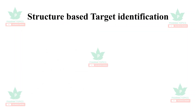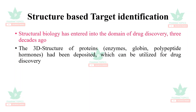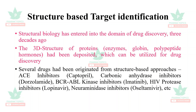Structure-based target identification: structural biology entered the domain of drug discovery three decades ago. 3D structures of proteins — for example, enzymes, globin, polypeptide hormones — have been deposited and can be utilized for drug discovery. Several drugs originated from structure-based approaches, such as carbonic anhydrase inhibitors like captopril and dorzolamide, BCR-ABL kinase inhibitors like imatinib, HIV protease inhibitors like lopinavir, and neuraminidase inhibitors like oseltamivir.